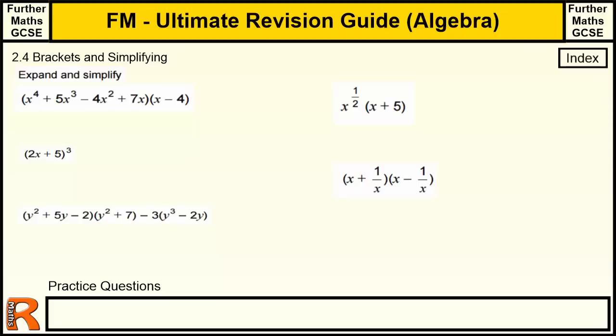Section 2.4, Brackets and Simplifying. This is part of the Ultimate Revision Guide to Further Maths GCSE, the Algebra section. We've got no bullet points this time, it's just multiplying out brackets.